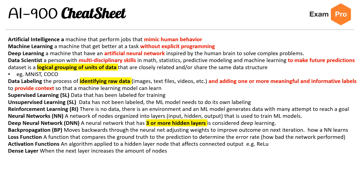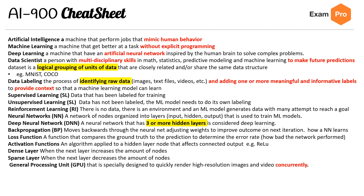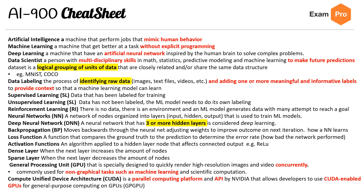Activation functions are algorithms applied to a hidden layer node that affect connected output — ReLU is a very common one. You have a dense layer, where the next layer increases the amount of nodes, and a sparse layer, where the next layer decreases the amount of nodes. GPUs are specially designed to quickly render high-resolution images and videos concurrently and are commonly used for non-graphical tasks such as machine learning and scientific computing. CUDA is a parallel computing platform and API by Nvidia that allows developers to use CUDA-enabled GPUs for general-purpose computing, also known as GPGPU.